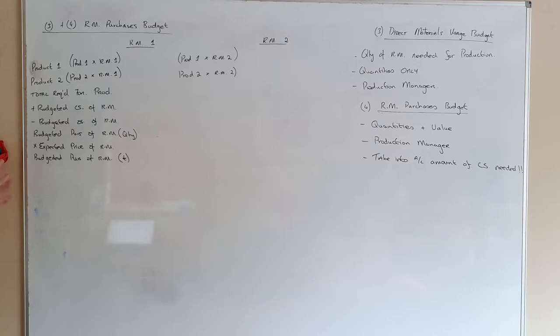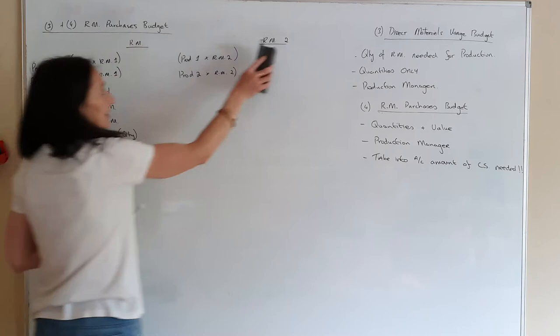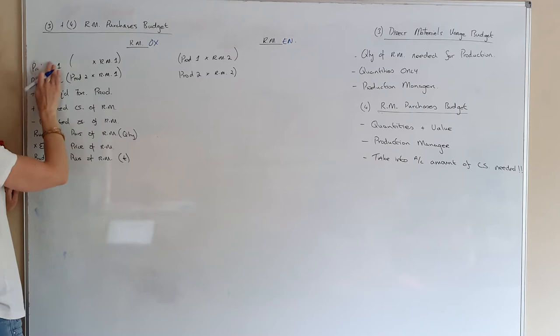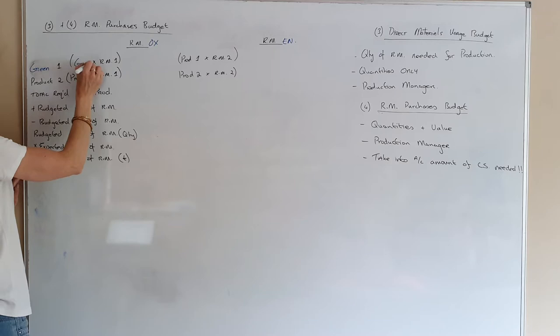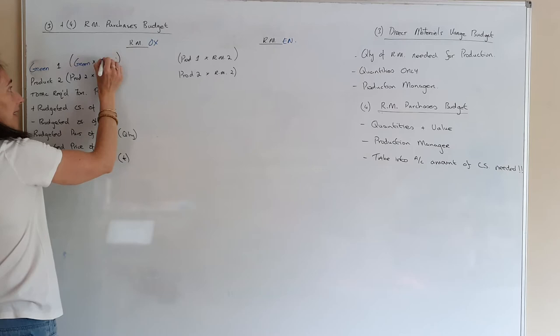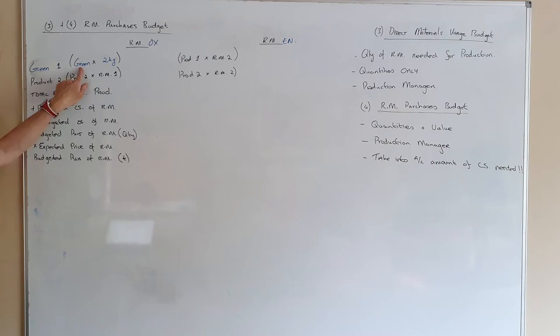We're going back to question one of the ordinary level to fill it in. I need material OX and material EN. The first product is the green line. Looking at the green line train — it needs two kilograms of material OX per unit. I need to go back to my notes to get how many units I'm making.